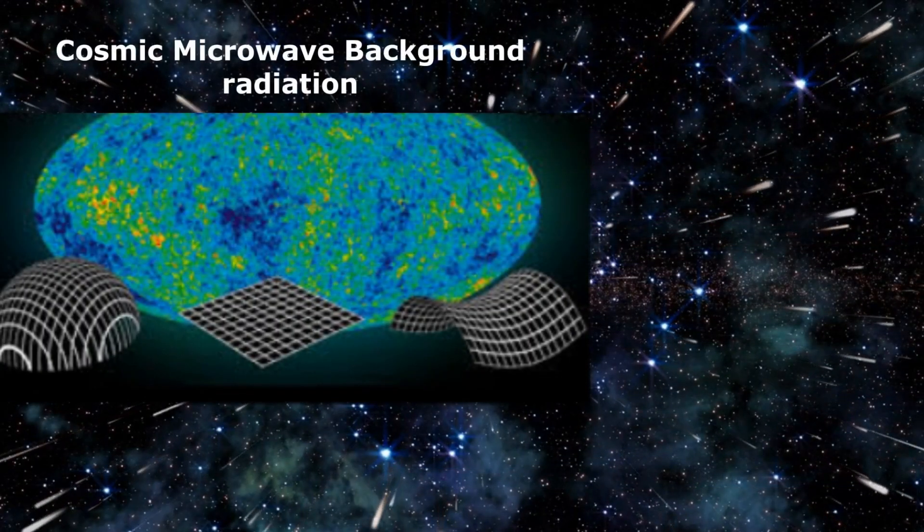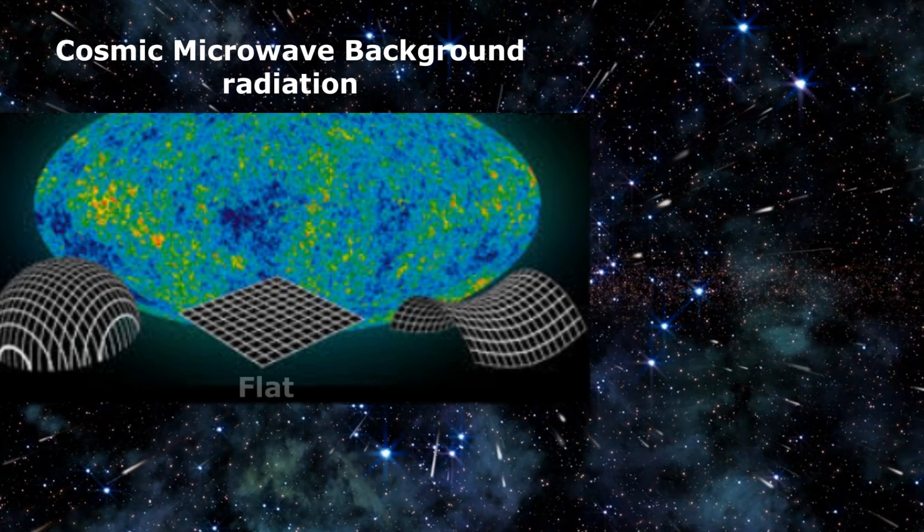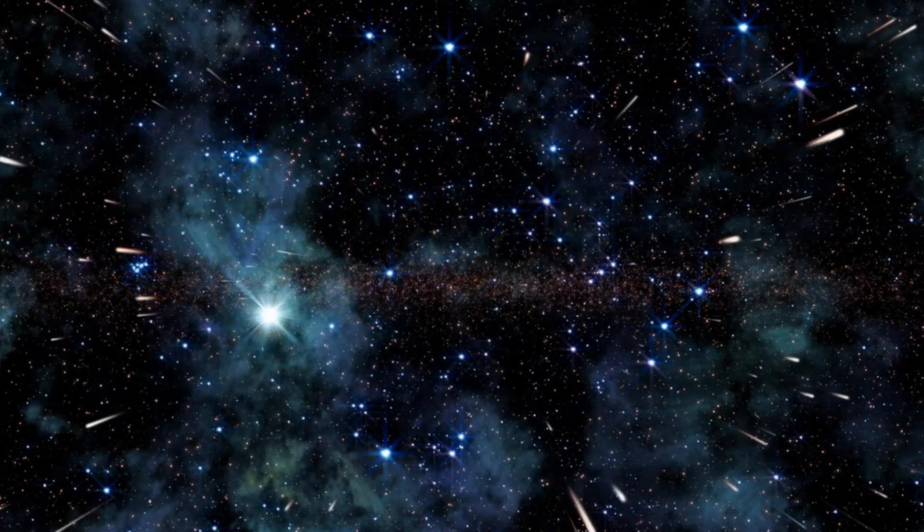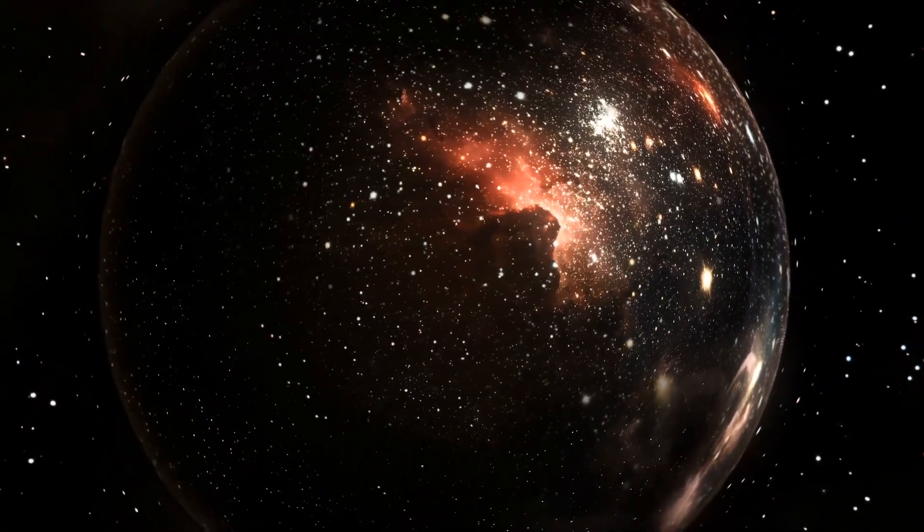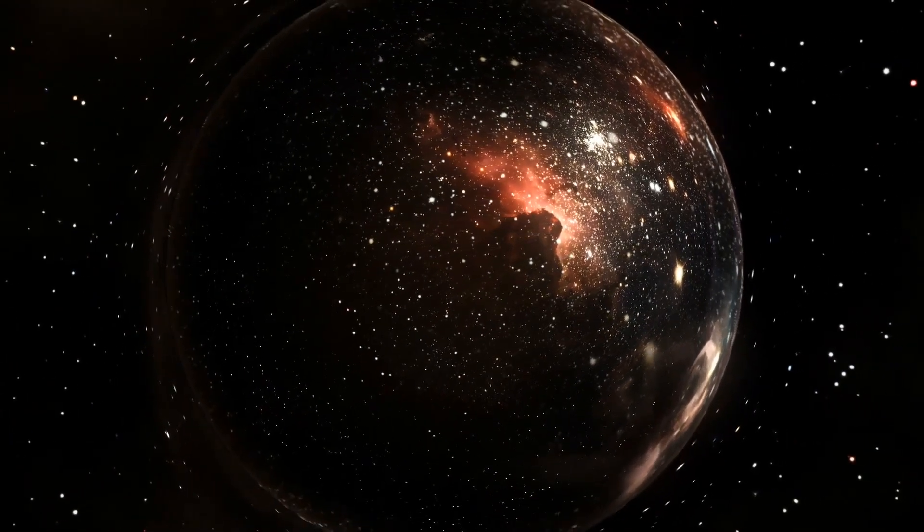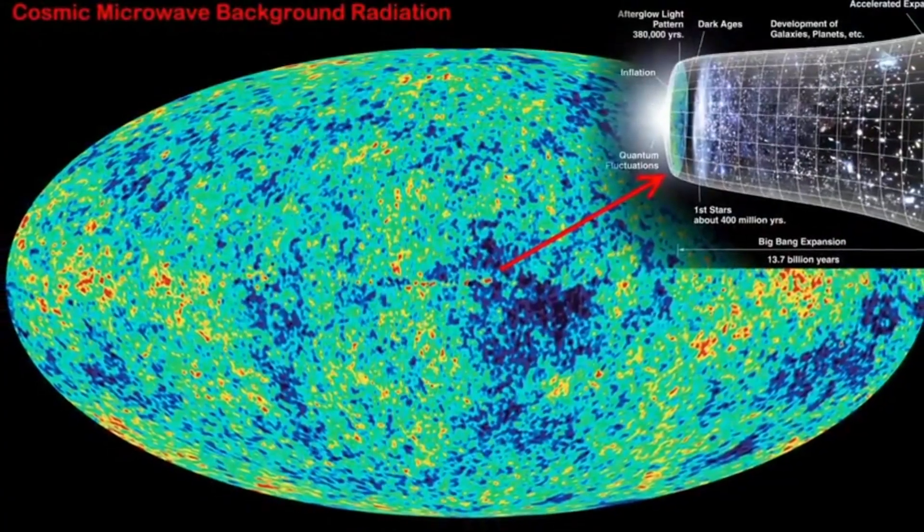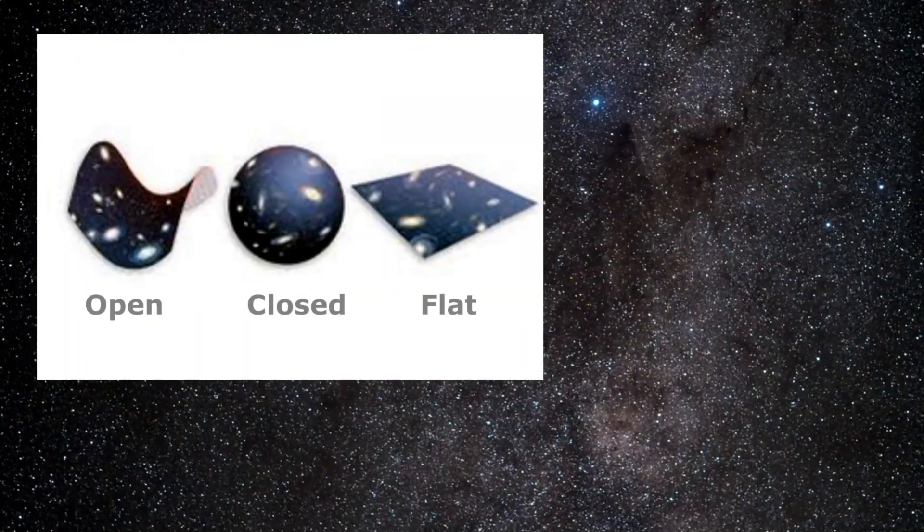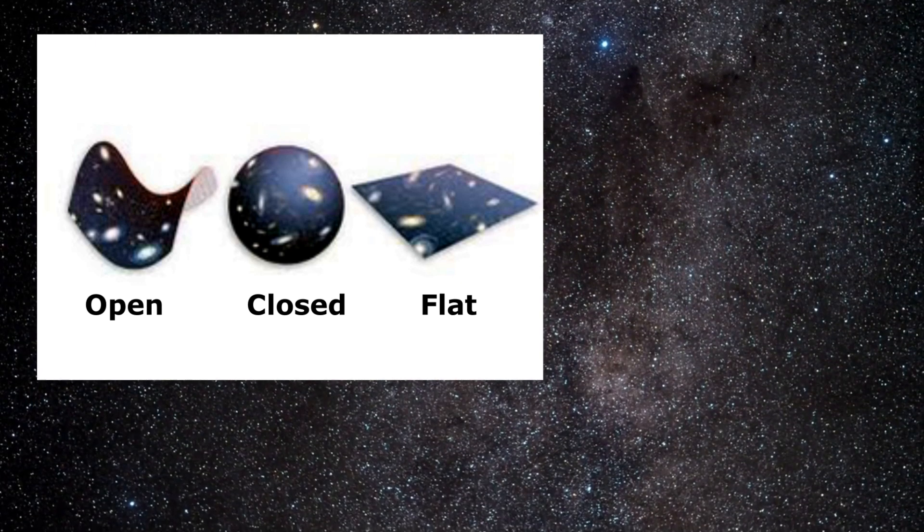If the universe's mass and energy density are just right at the so-called critical density, then it would be as flat as a sheet of paper and expand at an accelerating rate. If the density is greater, the universe would be curved like a balloon, and the additional gravity from this increased density would slow the expansion of the universe, eventually bringing it to a halt. Meanwhile, below this critical density, the expansion of the universe would accelerate even further. And in this scenario, the universe would have negative curvature and would resemble a saddle in shape, but it would still be infinite and centerless.